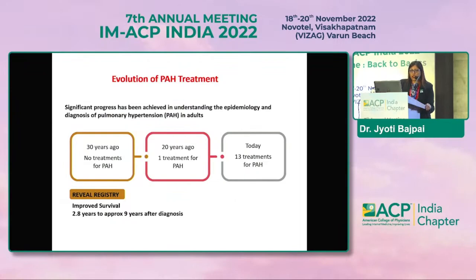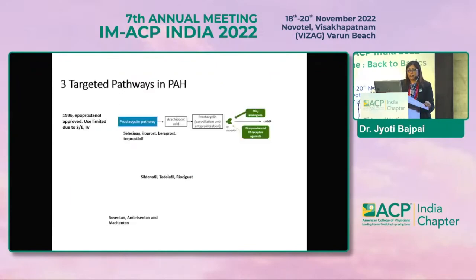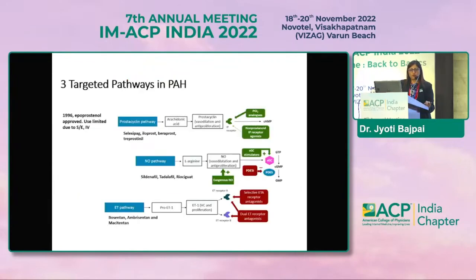Thirty years ago there was no treatment for PH; 20 years ago only one treatment; today we have a dozen drugs. Reveal registry data showed improved survival from 2.8 years to approximately 9 years after diagnosis. There are three target therapy pathways: the prostacyclin pathway (iloprost, epoprostenol, selexipag — with selexipag being an oral prostacyclin), the nitric oxide pathway (sildenafil, tadalafil, riociguat — a soluble guanylate cyclase stimulator), and the endothelin pathway (bosentan, ambrisentan, macitentan).